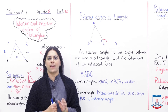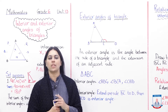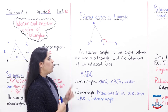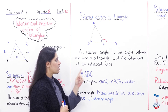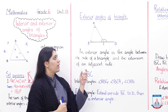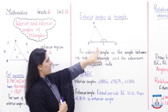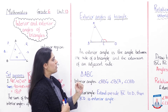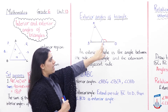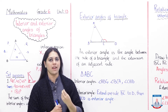We have studied the interior angles of a triangle. Ab hum study karenge exterior angles. Exterior angles wo hain jo triangle ke outside lie karte hain — we call them exterior angles. An exterior angle is the angle between one side of a triangle and the extension of an adjacent side. You can see here — this is a triangle, and the exterior angle is the angle formed outside at a point where the side has been extended.